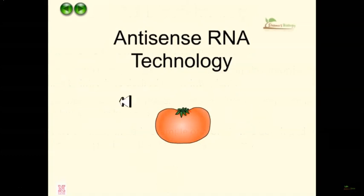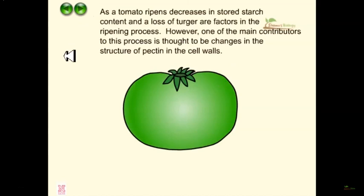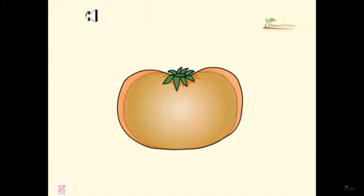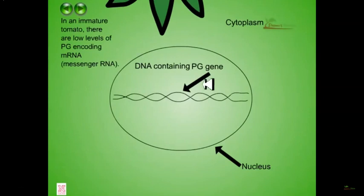This video discusses antisense RNA technology and its use in plant biotechnology. As the tomato ripens, decreases in stored starch content and loss of turgor pressure are factors in the ripening process. One of the main contributors is thought to be changes in the structure of pectin present in the cell wall. An enzyme called polygalacturonase (PG) correlates best with the softening of tomato fruits. The activity of PG increases during ripening, mainly degrading the pectin of the cell wall. In an immature tomato, there are low levels of PG-encoding mRNA, which codes for the PG protein.